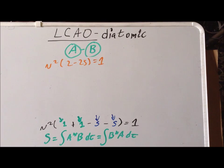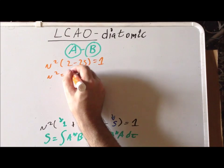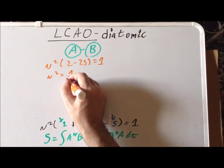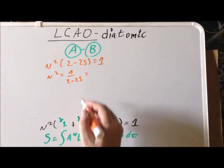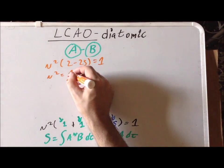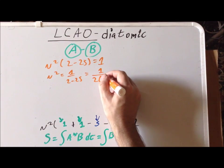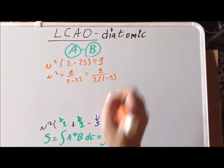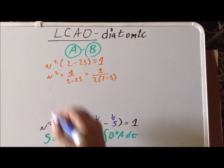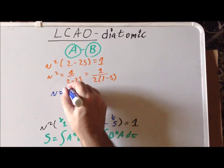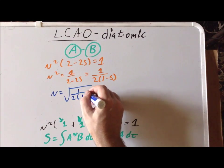We simply sum the terms inside the parentheses to get that N-squared times the quantity (2 minus 2S) is equal to 1. We divide each side by (2 minus 2S) to get N-squared equals 1 divided by (2 minus 2S). Factoring out a 2 in the denominator gives 1 divided by 2 times (1 minus S). Taking the square root of each side, N equals the square root of 1 divided by 2 times the quantity (1 minus S).